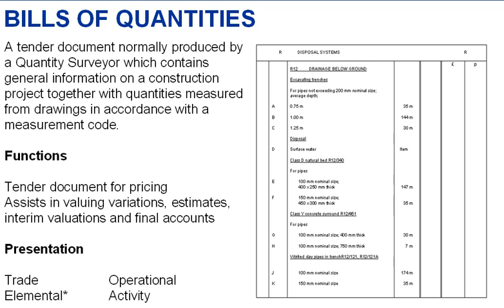A Bill of Quantities can be presented in numerous different manners. One would be on a trade basis, where each of the trades are taken out and measured as individual items. Second would be on an elemental basis, which is a standardization of a cost control procedure. And thirdly, we have the operational activity basis.